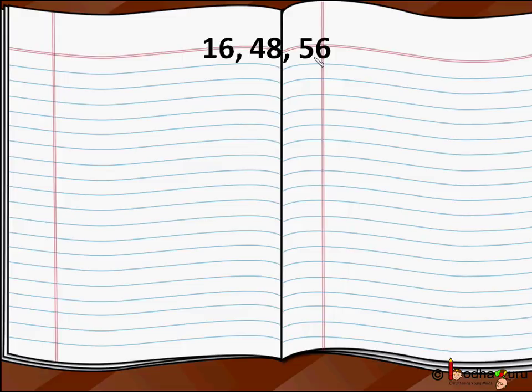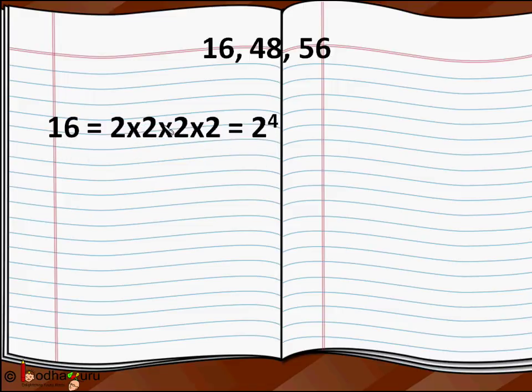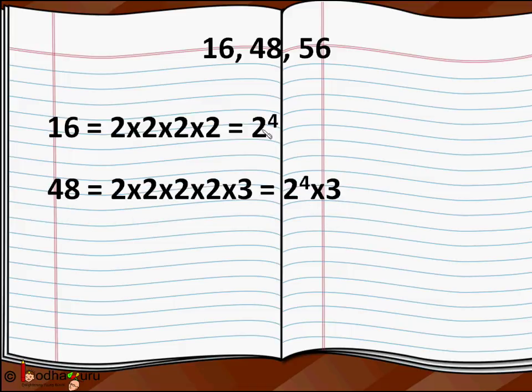Now we cannot use Euclid's division algorithm, so we can rely on prime factorization for finding HCF. So we divide 16 in such a way that we get it as a product of factors. So 16 = 2×2×2×2 = 2^4.